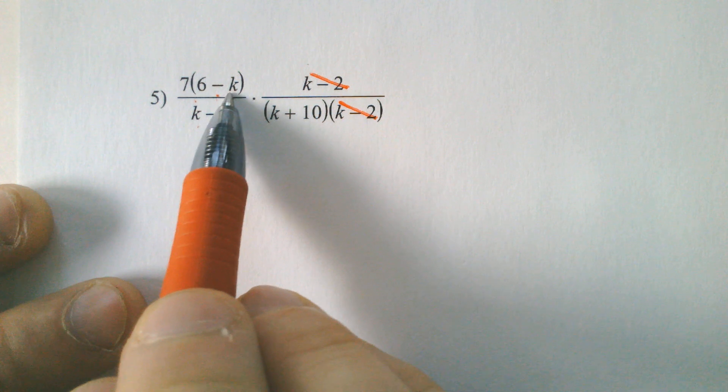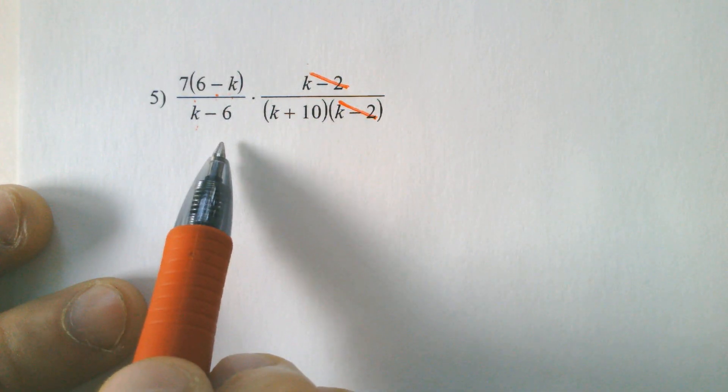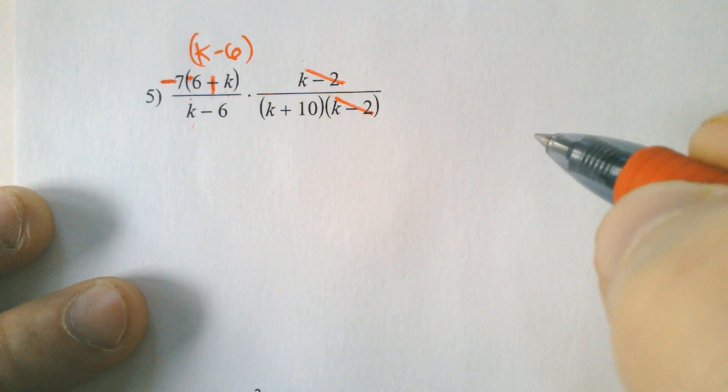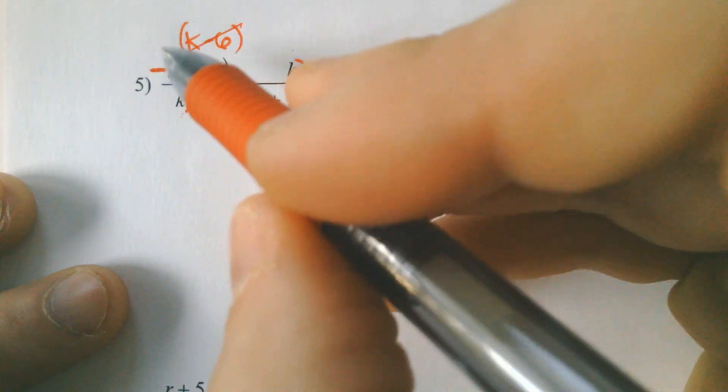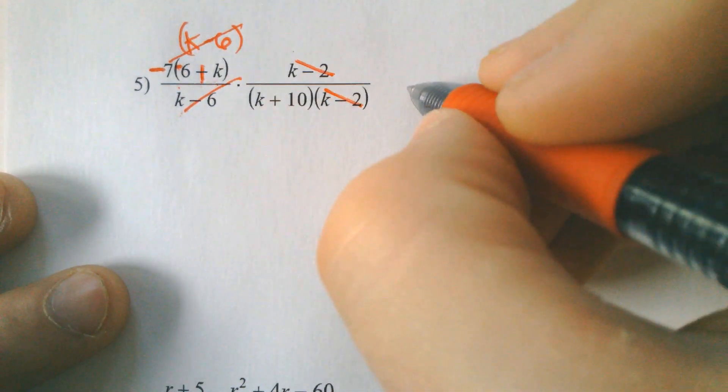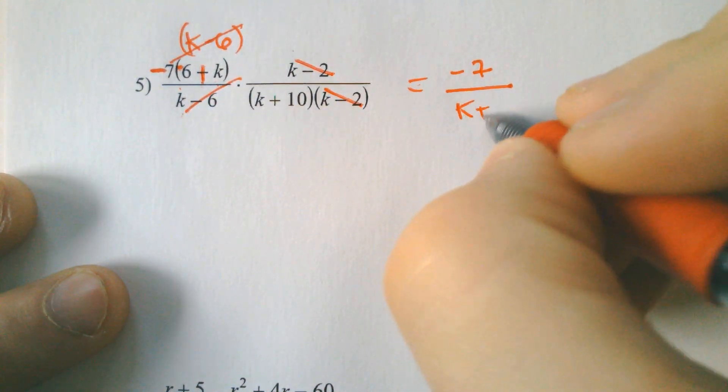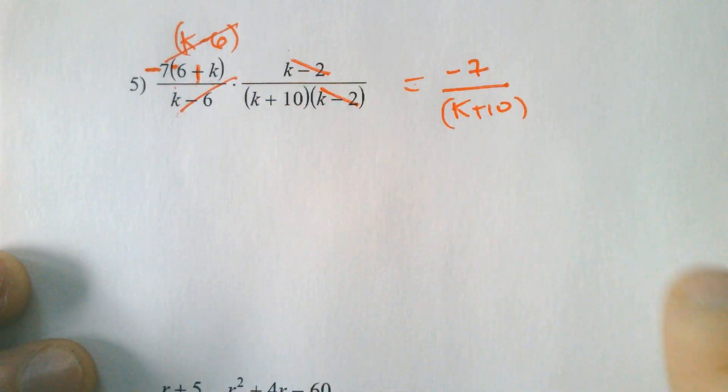Because see how this is a negative k, and that's a positive k, and this is a positive 6 and a negative 6. This is another situation where you would need to factor out the negative and change the sign, change the sign of both of these to make it a k minus 6 like we want to get it to cancel. So we had to factor out that negative, and then we end up with our final answer of negative 7 over k plus 10.